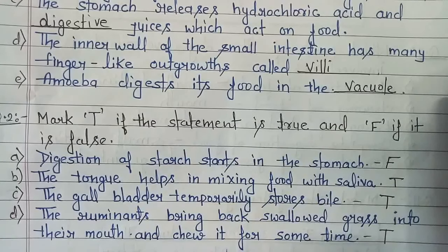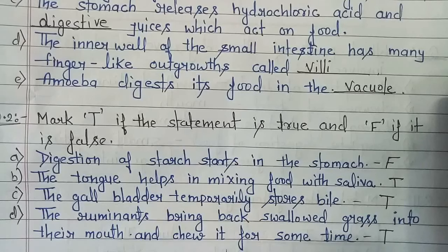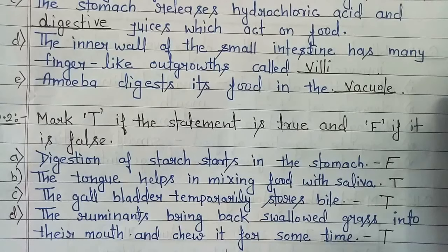The first part: digestion of starch starts in the stomach — that is False, because digestion of starch starts from your mouth. Part B: the tongue helps in mixing food with saliva — that is True, because our tongue helps saliva to mix with the food.